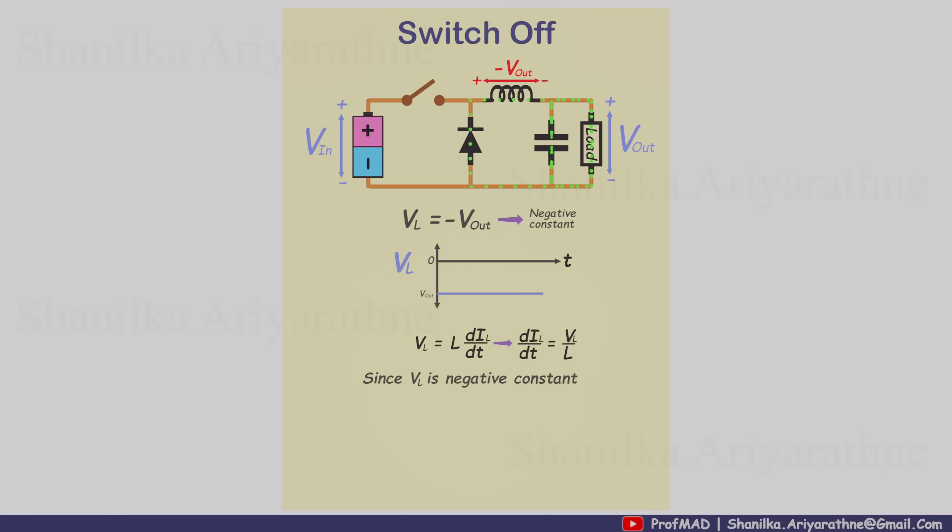Once again, because the voltage across the inductor is constant, the current changes linearly. This time, it ramps downward, so the inductor current falls in a straight line.